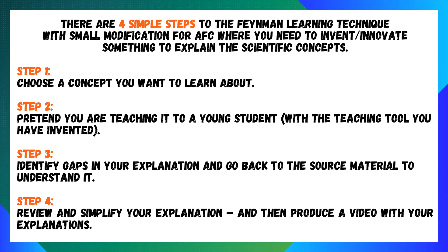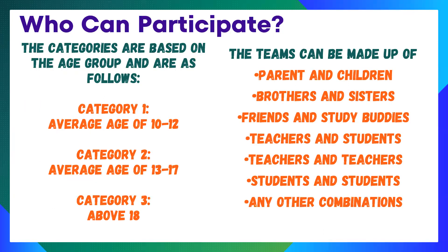These are four simple steps you can use to prepare your concepts. Who can participate in this AFC competition? There are three categories. Category 1: average age between 10 to 12 years old. Category 2: average age between 13 and 17 years old. Category 3: above 18 years old. Teams can be made up of parents and children, brothers and sisters, friends and study buddies — all backgrounds can form a team.